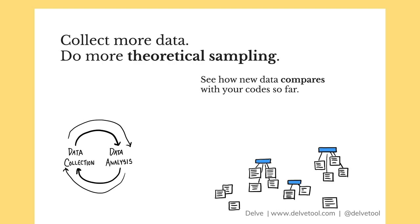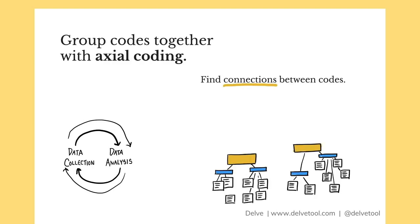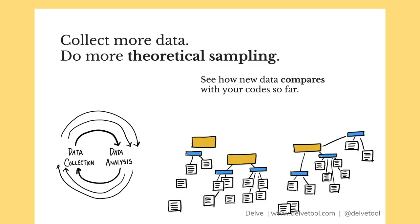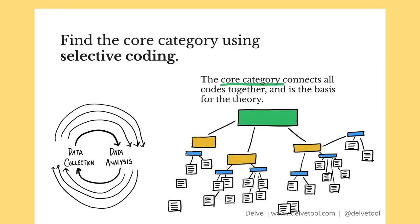As you continuously do more rounds of data collection, your codes and groupings will change. Eventually, you'll take those codes and group them together in a step called axial coding — think of it like finding the axes that connect codes together. After grouping codes into categories, go and collect more data, continuing to refine those codes and categories. Once you have a set of categories, you'll define one core category which ties all these categories together in a step called selective coding. This core category connects all your codes together and becomes the basis for your final theory.